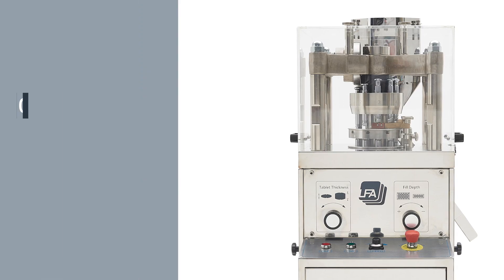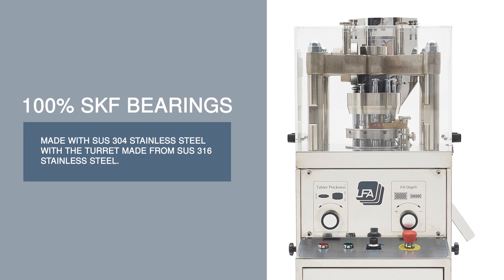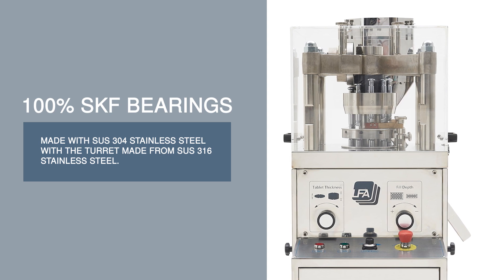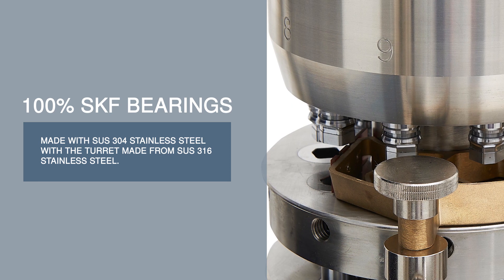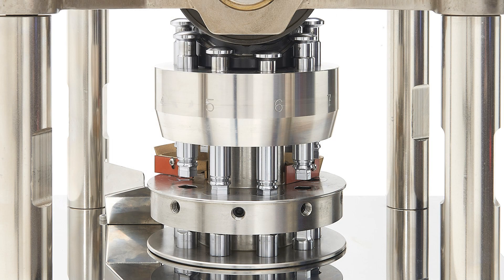The RTP-118 has 100% SKF bearings and is made from SUS 304 stainless steel, and the turret with SUS 316. This press is stronger, more reliable, with greater corrosion resistance.